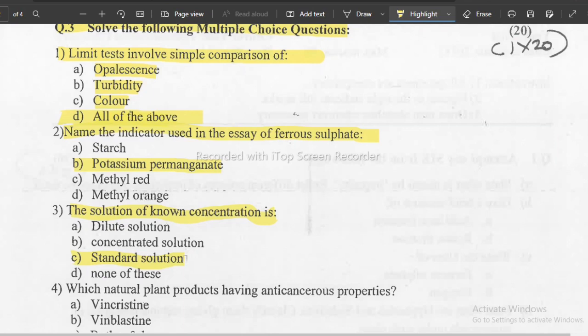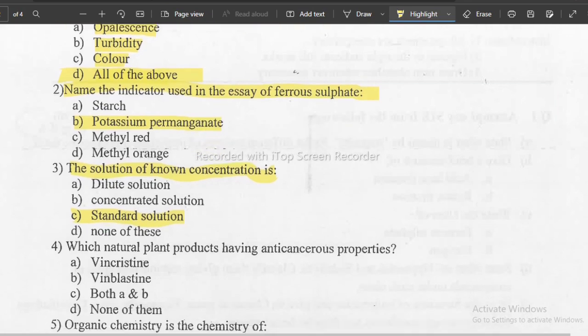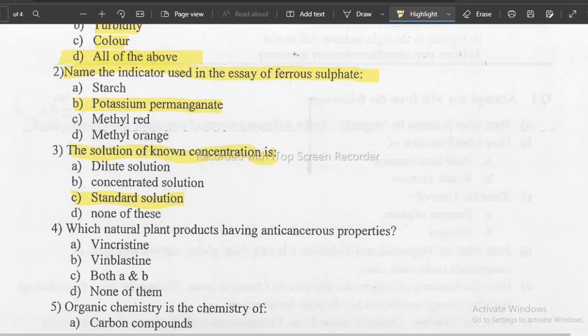Next question is which plant product having anti-cancerous property. This is classification of anti-cancer. The answer is C, that is both A and B. It includes vincristine and vinblastine. So the correct answer is C.